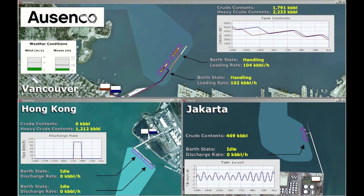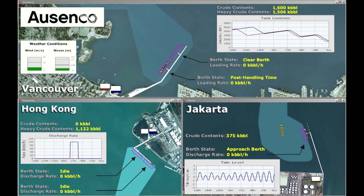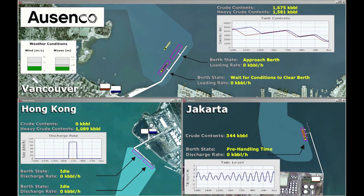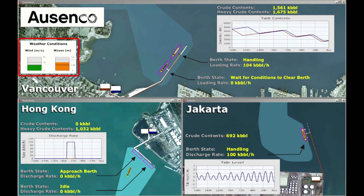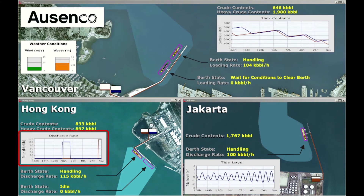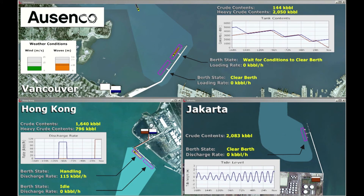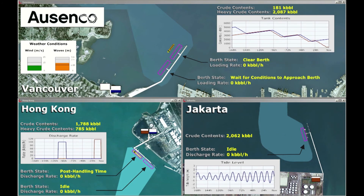In this view, we see the detailed operations at the Vancouver, Hong Kong, and Jakarta terminals. We are able to account for real-world constraints such as weather conditions and their impact on berthing and loading operations, tides and their effect on channel traffic, handling rates by product, maintenance schedules and equipment breakdowns, pilot rules, and other vessel traffic.